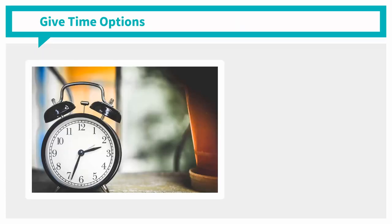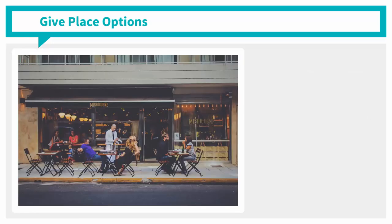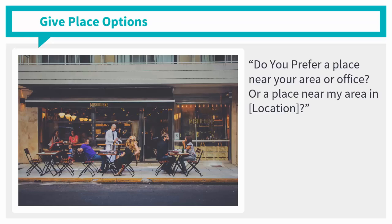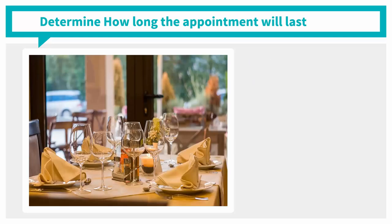Give time options. Give an earlier time and a few hours later than your first time option. You may ask, 'Do you prefer 10 a.m. or 3 p.m.?' Your prospect could be busy in the morning, so set your second time to when they could have lesser workloads. Give place options. Offer to meet up in a place near their area or office, then offer an option near your area or office, so that when the prospect has a very busy schedule, they can choose the option near their office. If it will be a short meeting, you can give the option of having something to drink like tea or coffee. If you will be having a longer meeting, you can give an option where you can have a peaceful meal and discuss at length.